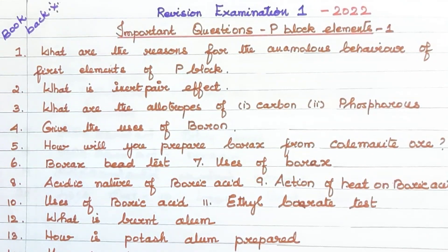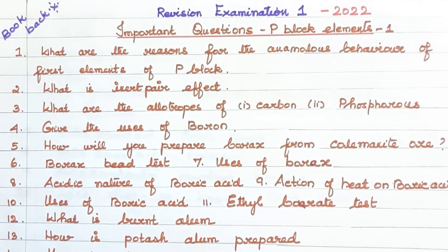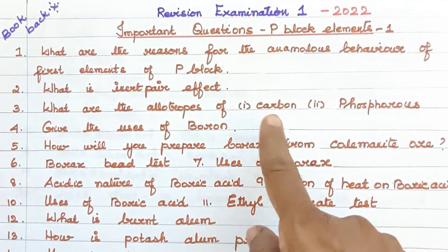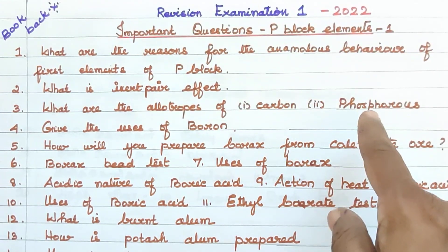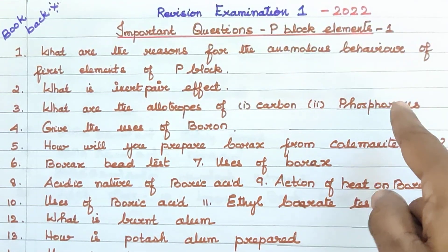Take a screenshot. What are the reasons for the anomalous behaviour of the first elements of P Block? What is the inert pair effect? What are the allotropes of Carbon and Phosphorus? If you have these two elements, you can see all of them at a glance.